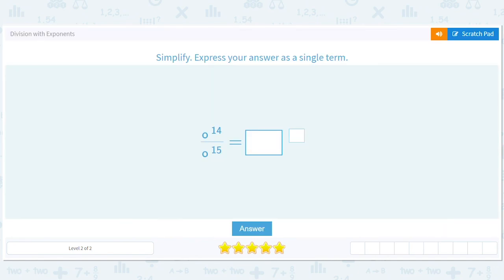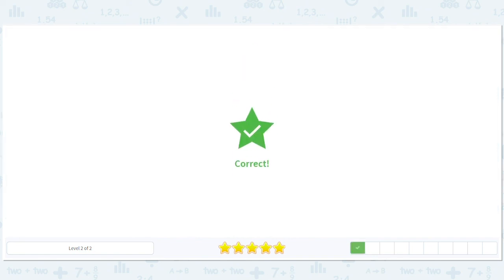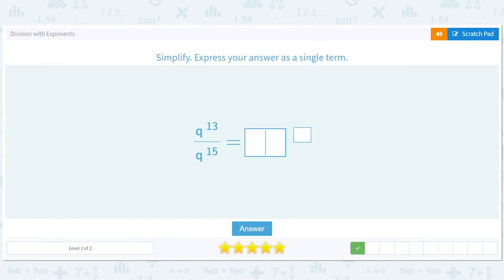Same thing. Whenever you see o in these problems just realize that's an o that's not a zero. So that's just 14 minus 15 is negative 1, so that's o to the negative one. Okay practice your exponent division, I'll see you next time.